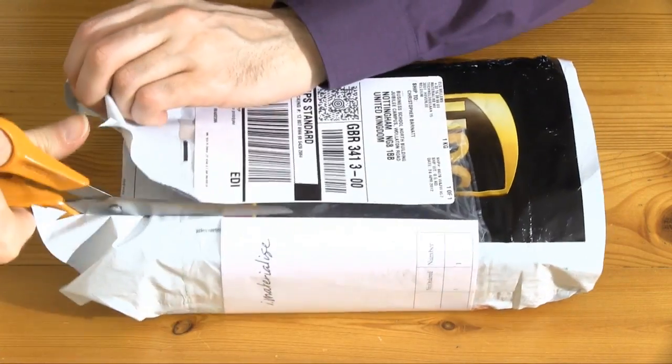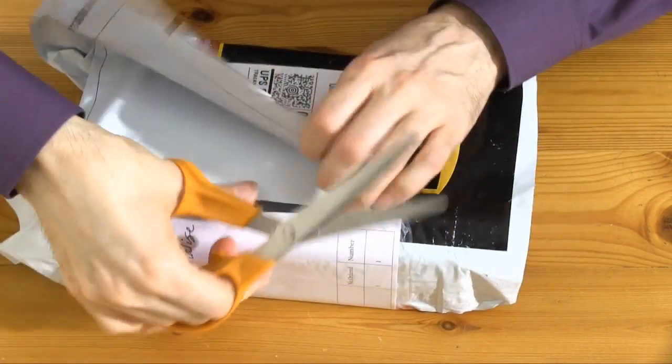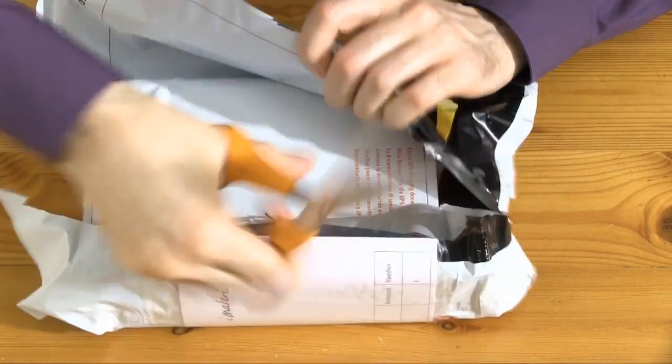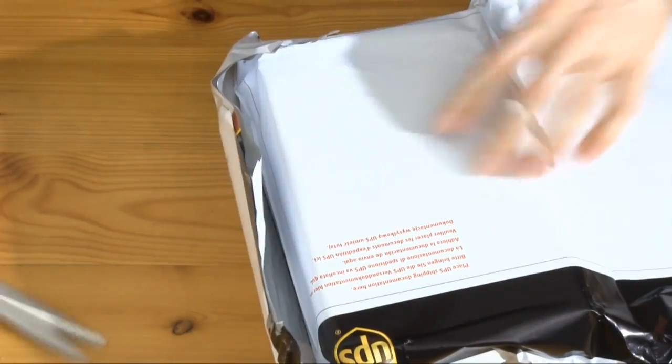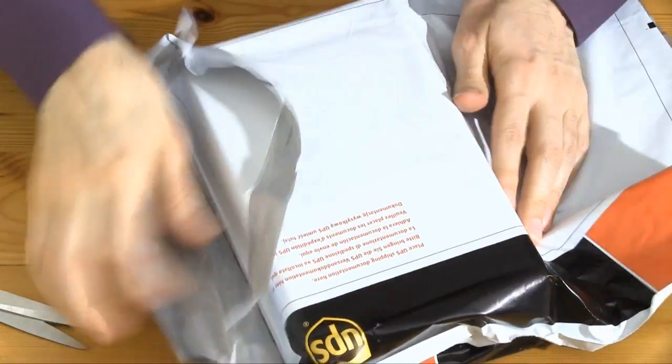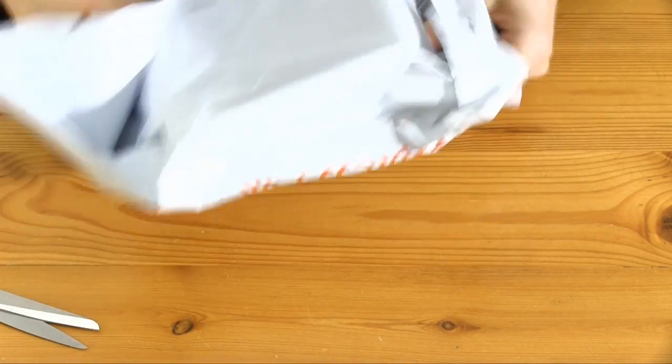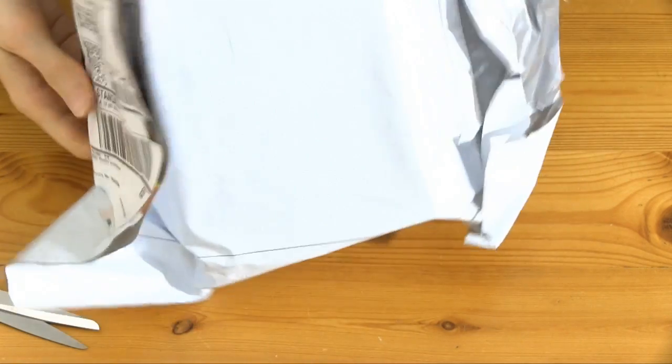Okay, so we have the excitement of watching me open polythene. There we are. Let's see what's in here. Obviously a UPS packaging. Somehow in here there'll be, I imagine, a box.